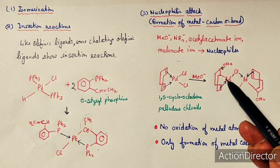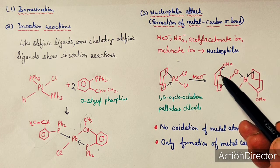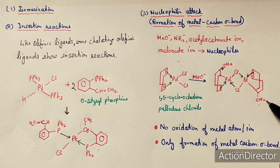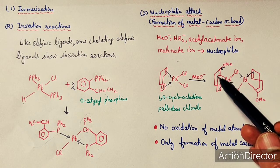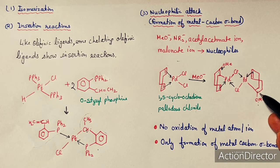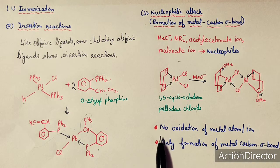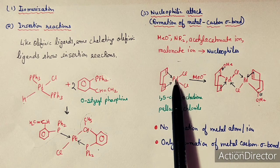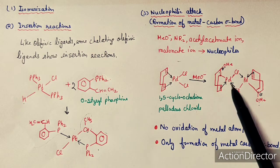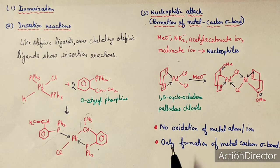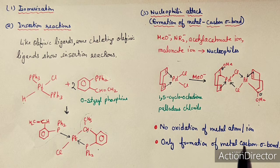The OMe group attaches to one carbon, so coordination from that site is lost, but there is a bond through that carbon atom. In the second ring, the second OMe group is also joined. Thus, two pi bonds convert into metal–carbon sigma bonds. Importantly, no oxidation of the metal ion occurs — the oxidation state of palladium remains +2 — only metal–carbon sigma bond formation takes place.